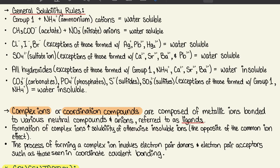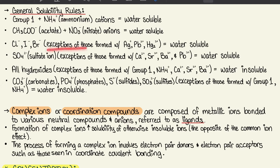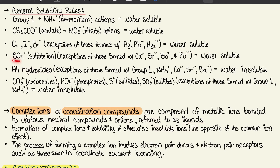For MCAT solubility rules: Group 1 cations plus ammonium (NH₄⁺) are considered water soluble. Acetate and nitrate ions are also water soluble. Cl⁻, I⁻, and Br⁻ are water soluble with the exceptions of those formed with Ag⁺, Pb²⁺, and Hg₂²⁺.